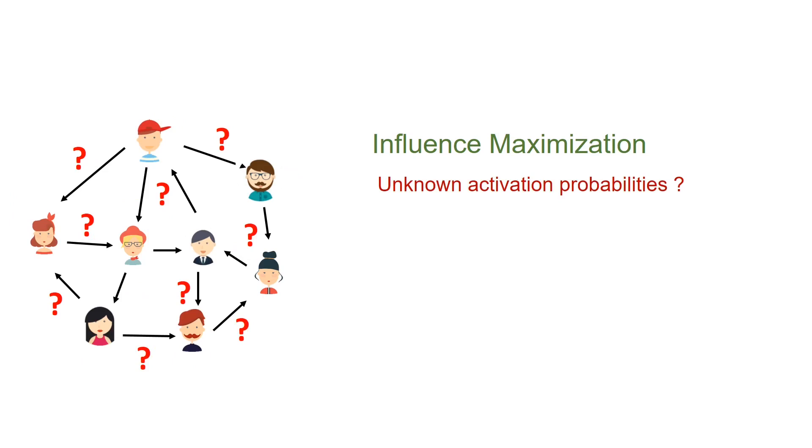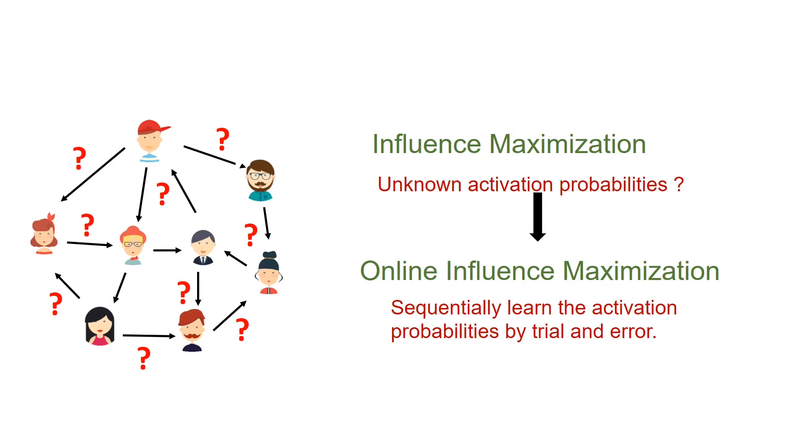However, what if these activation probabilities are unknown? In this case, online influence maximization is needed, where we sequentially learn the activation probabilities by trial and error.